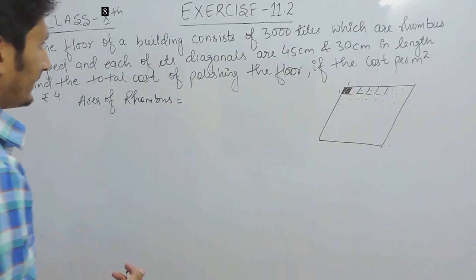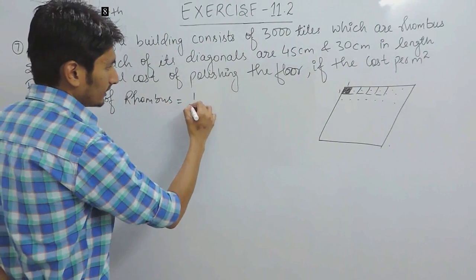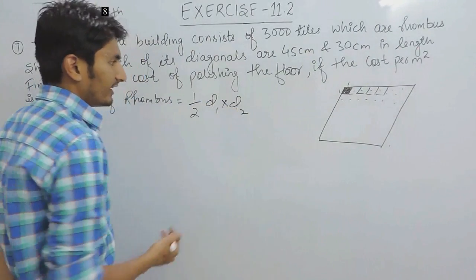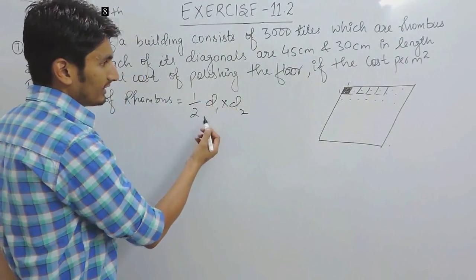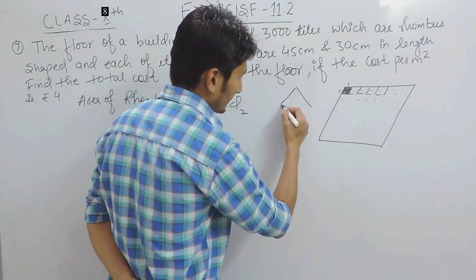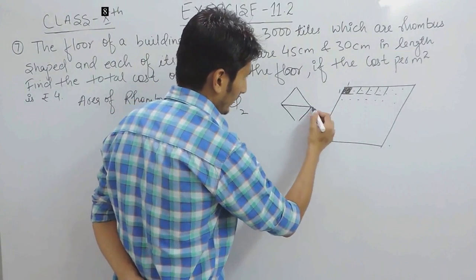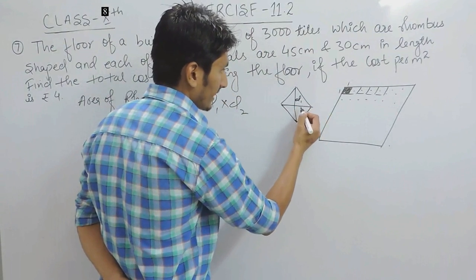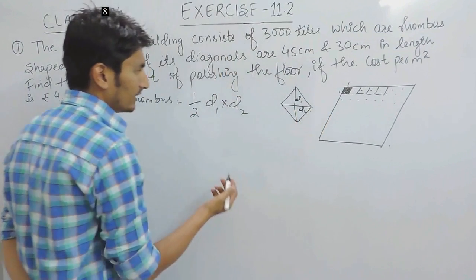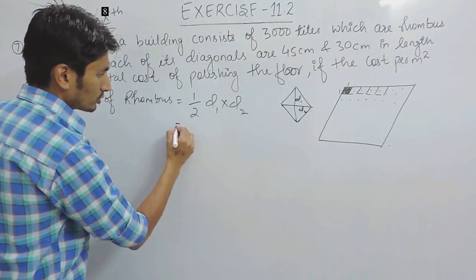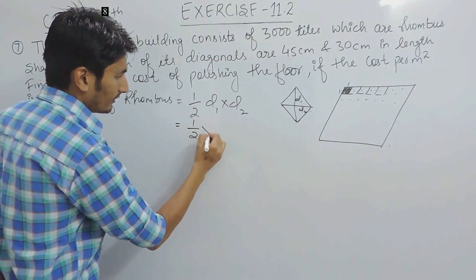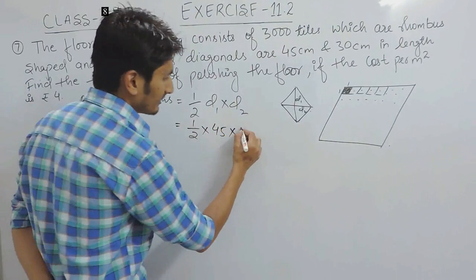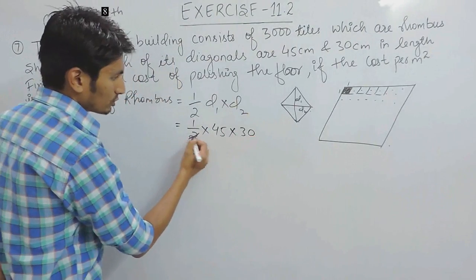The area of rhombus, we know that the formula for area is half D1 into D2, where D1 is the first diagonal. If this is a rhombus and I have to find the area, this is first diagonal and this is second diagonal. So if I multiply these two, I will get the answer. So half, our first diagonal is given as 45 cm and our second diagonal is given as 30 cm.